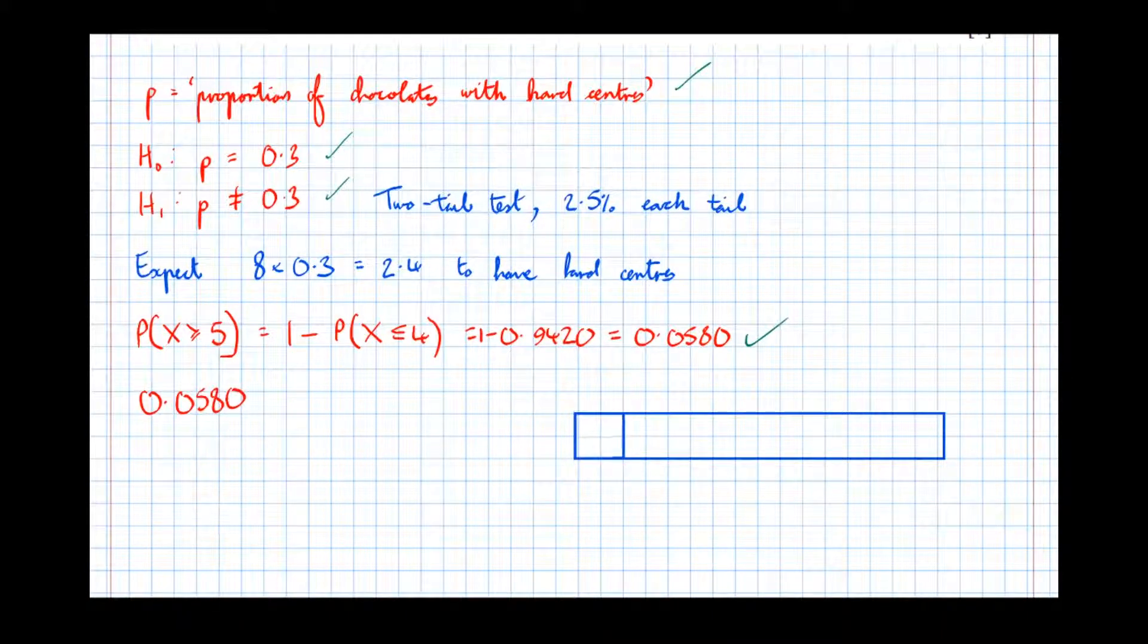We reject the bottom 2.5% and the top 2.5%, so this is our rejection region here—there and there—the bottom 2.5% and the top 2.5%, overall 5% rejection region. So expectation was 2.4, so that's back in the middle there.